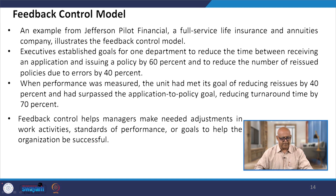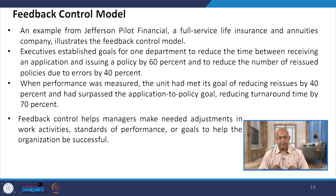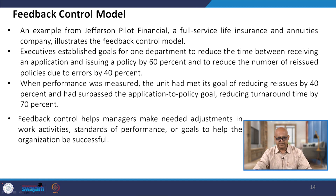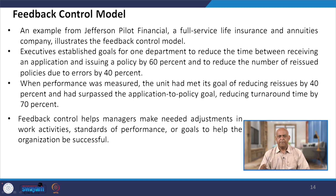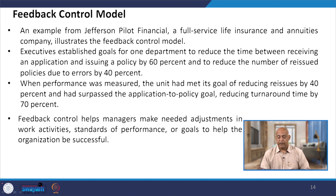An example from Jefferson Pilot Financial, a full-service life insurance and annuities company, illustrates the feedback control model. Executives established a goal for one department to reduce the time between receiving an application and issuing a policy by 60 percent. When performance was measured, the unit had met its goal of reducing issues by 40 percent and had surpassed the application-to-policy goal by reducing turnaround time by 70 percent.